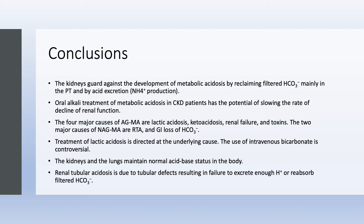These are the conclusions from this long chapter on metabolic acidosis. The kidneys guard against the development of metabolic acidosis by reabsorbing almost all of filtered bicarbonate in the proximal tubule, and also the kidneys do acid excretion by mainly ammonium production.